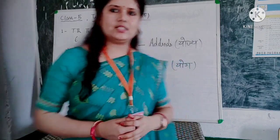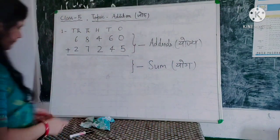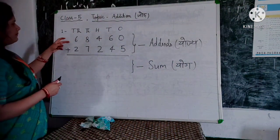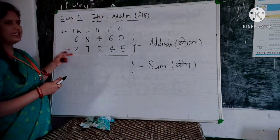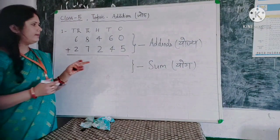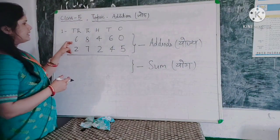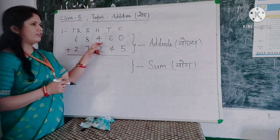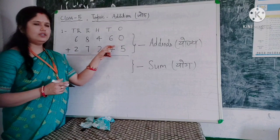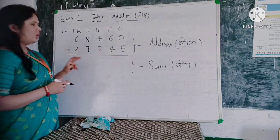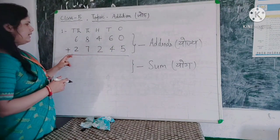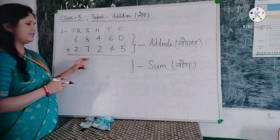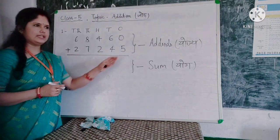Let's understand the example. In the board, you can see that there are two numbers. The first one is 68,460 and the second one is 27,245.